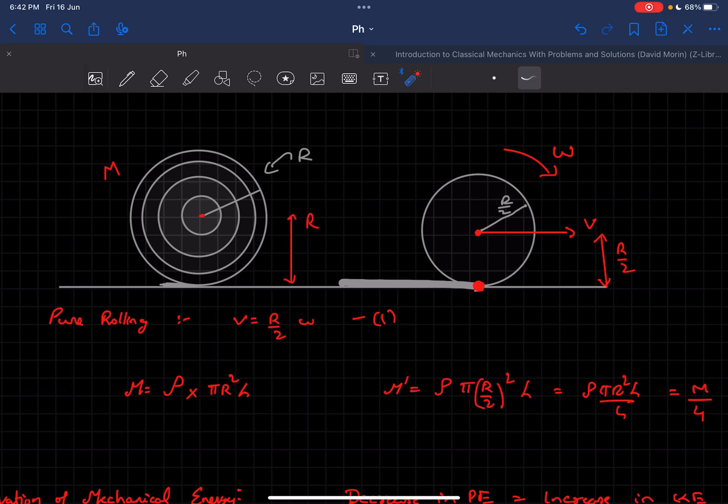Finally, the radius becomes r/2. If we want to find the new mass, it would be density ρ times the new volume, which comes out to be one-fourth of the original volume. So the new mass is m/4. The mass of this cylinder would be one-fourth of the original one.